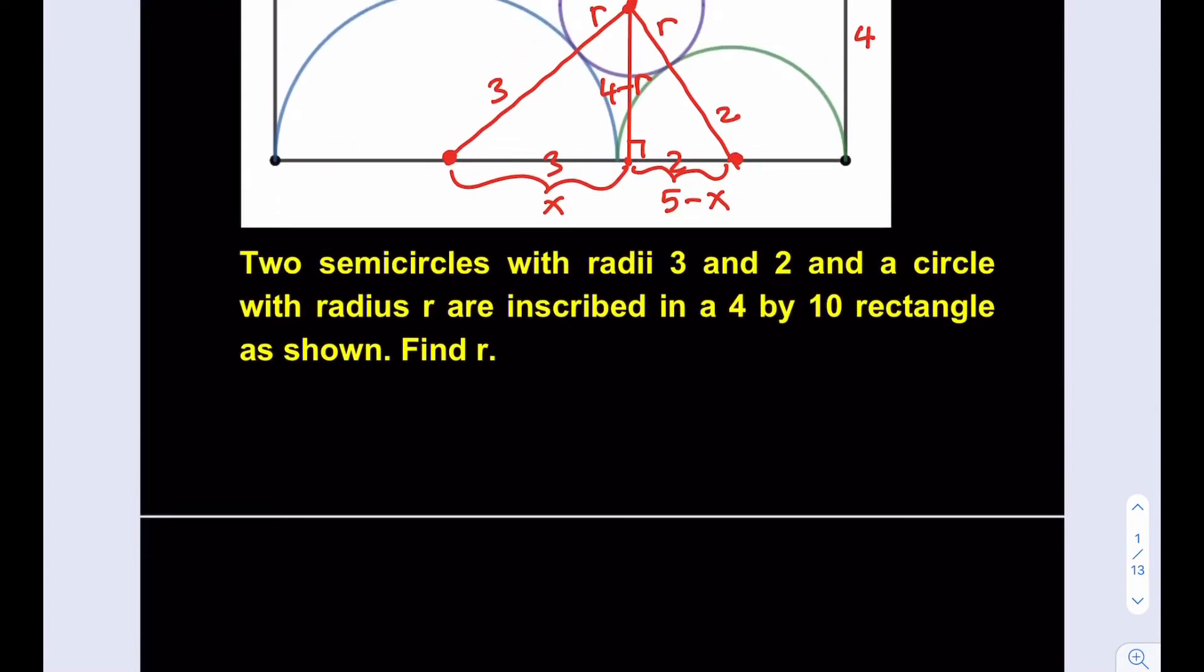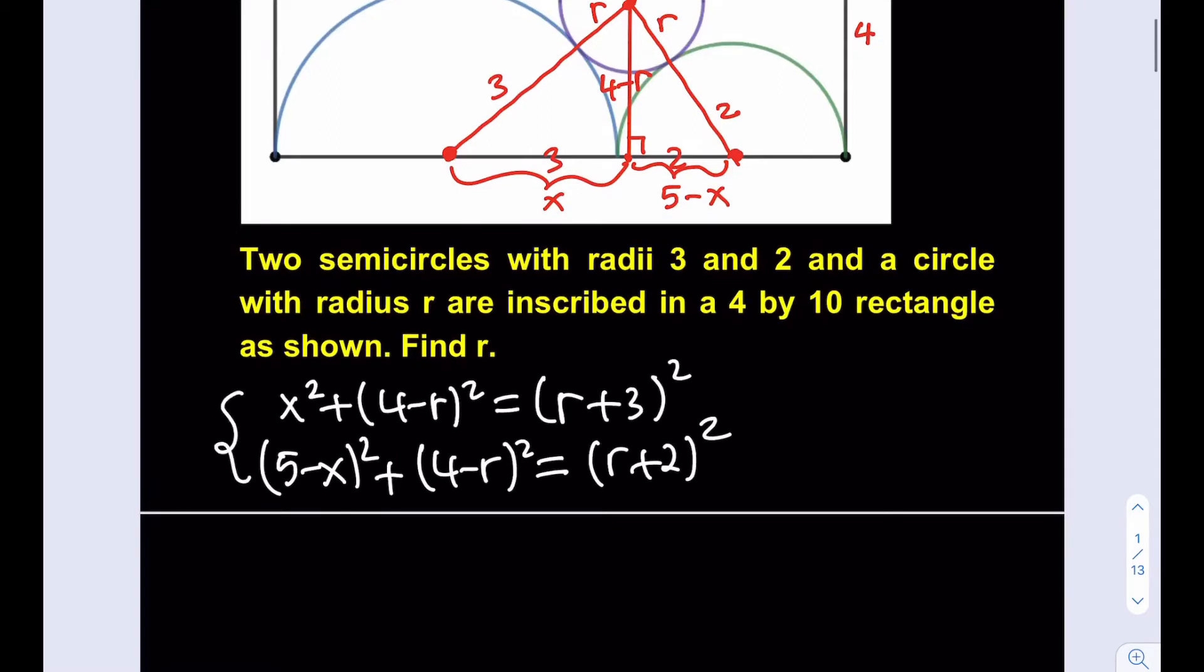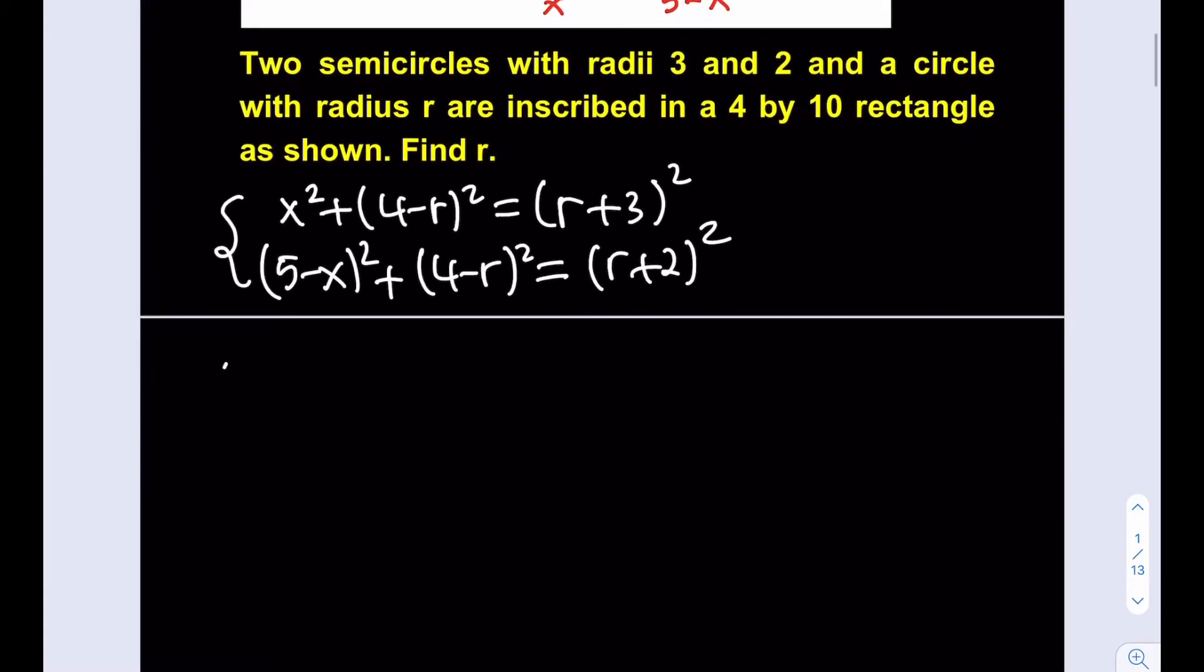I'm going to be using these two right triangles with the Pythagorean theorem. So let's go ahead and write that. I have x squared plus 4 minus r squared, which is equal to r plus 3 squared. And then from the second equation, I get 5 minus x quantity squared plus 4 minus r quantity squared. Again, 4 minus r is repeated because they're sharing the same height. And that's going to equal r plus 2 quantity squared.